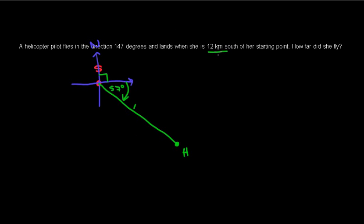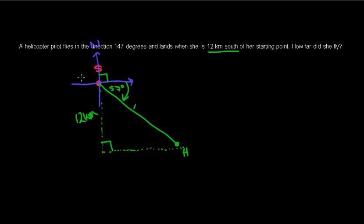She lands when she's 12 kilometers south — that's not the full flight distance, that's how far south she is. The whole idea of our diagram is to have a right-angle triangle because we'll be using trigonometry to solve the lengths. So I put the 12 kilometers on the south line. That's often the hardest part — figuring out where the lengths go. We had our starting point S, drew the north-east-south lines, drew our 147-degree line going south-easterly, and marked the 57 degrees.